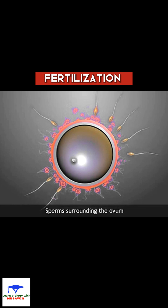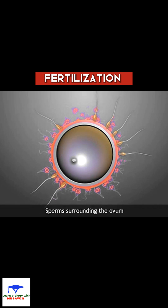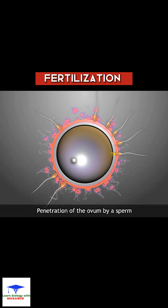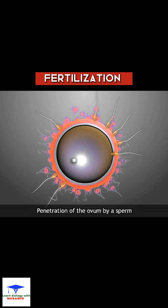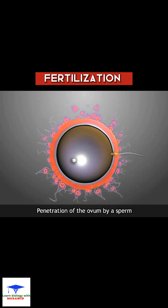Many sperm lysins, released by the acrosome, help a sperm penetrate the ovum. Only one sperm enters the ovum by passing through the corona radiata, the zona pellucida, and the vitelline membrane. The zona pellucida becomes impermeable to other sperms.